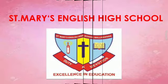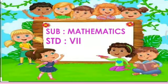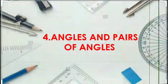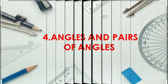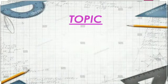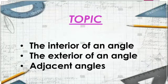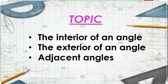Welcome dear children. Subject: Mathematics, Standard 7th, Chapter 4: Angles and Pairs of Angles. Today in this chapter we will cover three topics: the interior of an angle, the exterior of an angle, and adjacent angles.